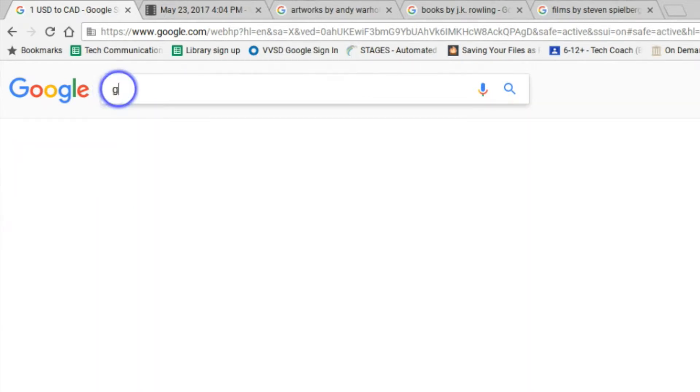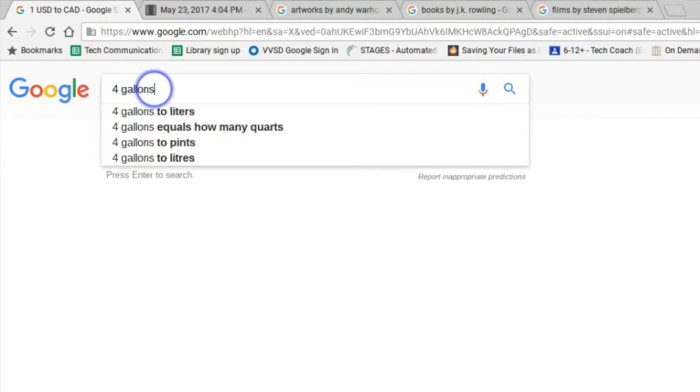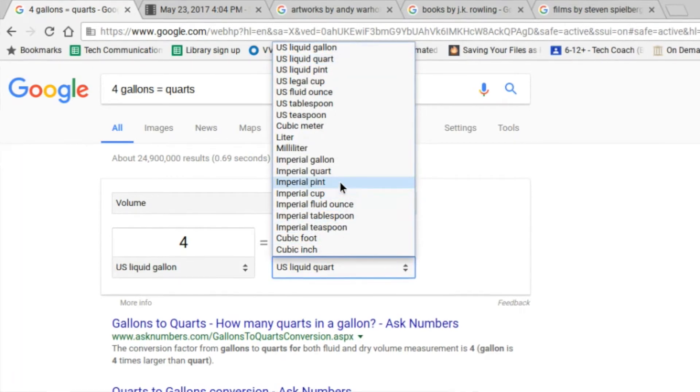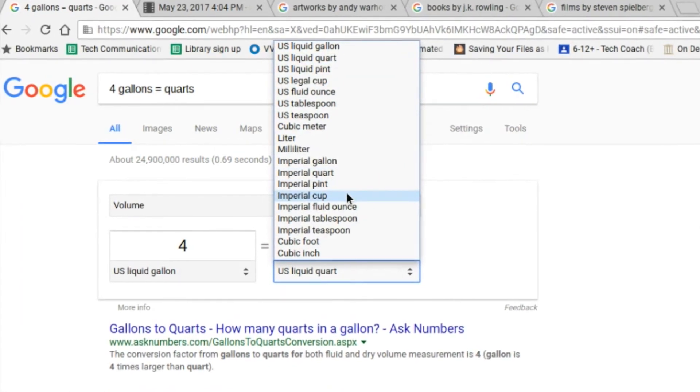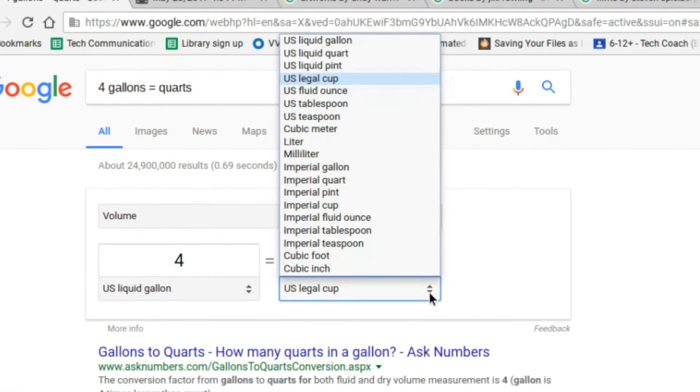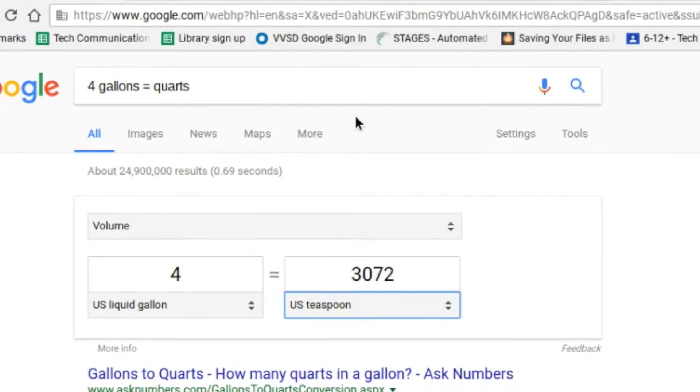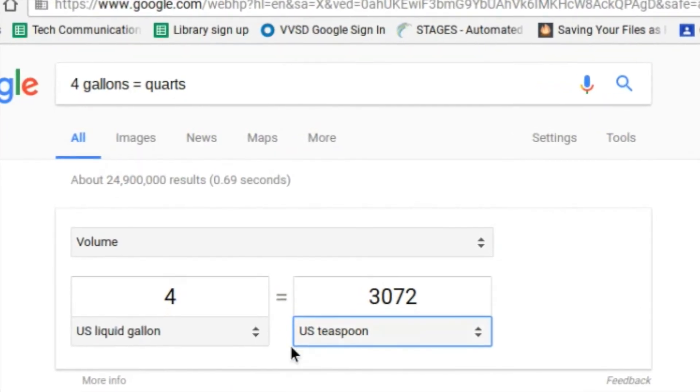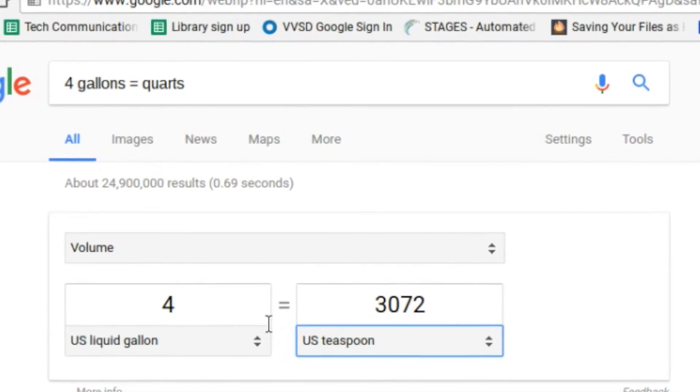What if we wanted to convert 4 gallons equals how many quarts, cups, pints? We can get all of those here. There you go. And again, we can just change this here. If we wanted to get quart, what if we wanted to have cups? What if we wanted to have a teaspoon? Right? So we can convert all sorts of different units here directly through the Google homepage.